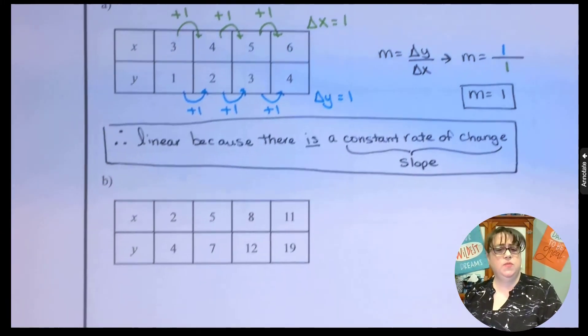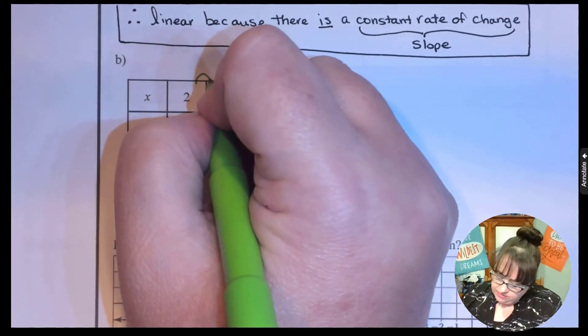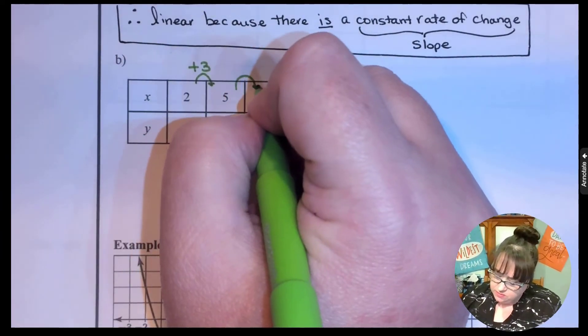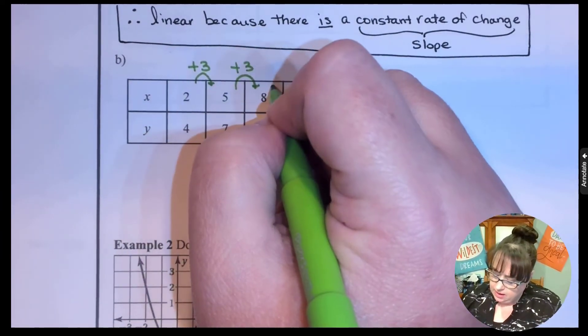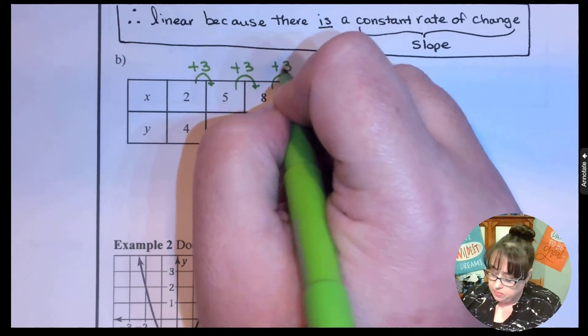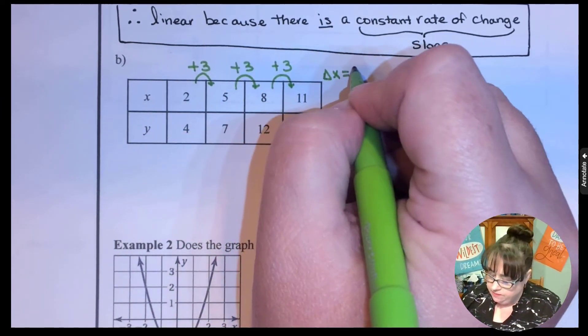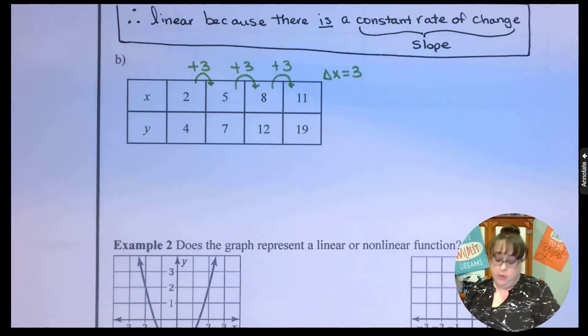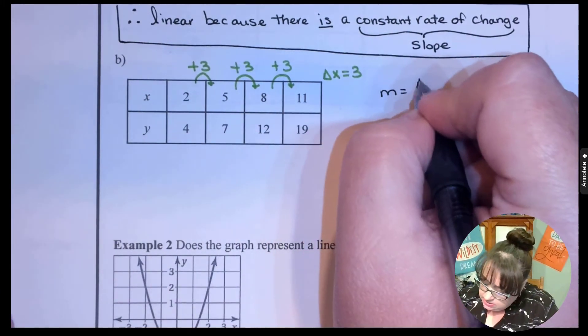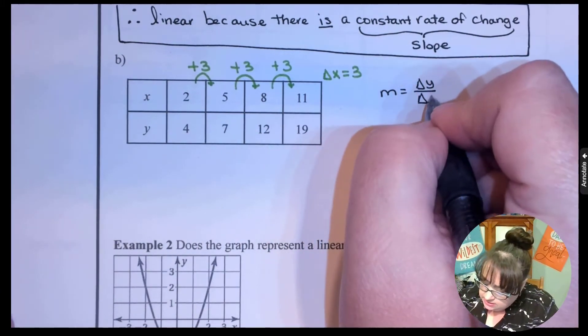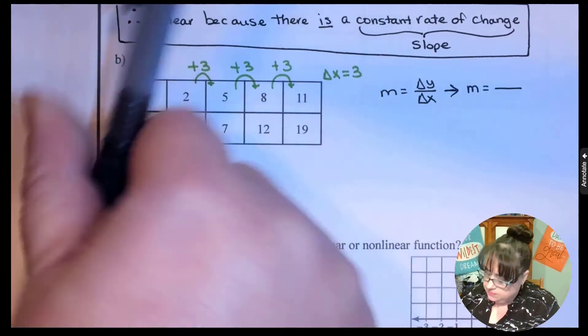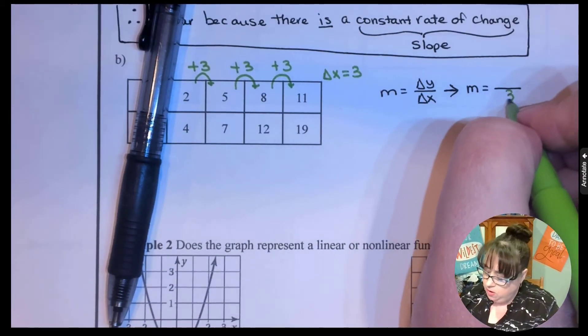So let's look at the next one. Between 2 and 5 is 3, 5 plus 3 is 8, and 8 plus 3 is 11. So so far, we have a delta x of 3. It's looking pretty promising. If m equals delta y over delta x, we have something over 3.